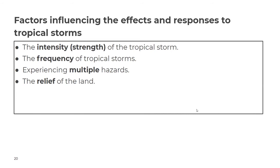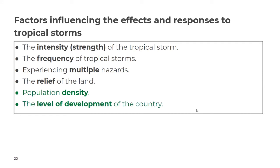More developed countries are able to prepare more effectively for tropical storms, reducing the effects of the hazard. They are also able to respond to impacts more rapidly, which again reduces the impact. Overall, the most significant factor could be the development of the country, as this factor would help to overcome many of the other challenges.